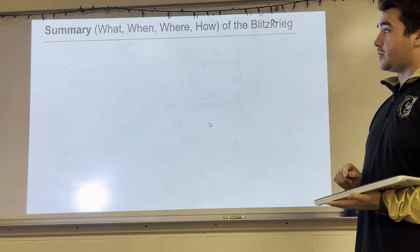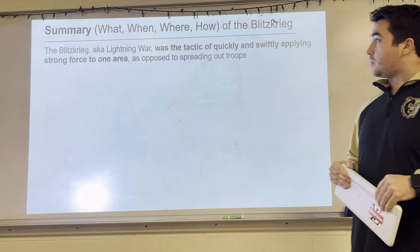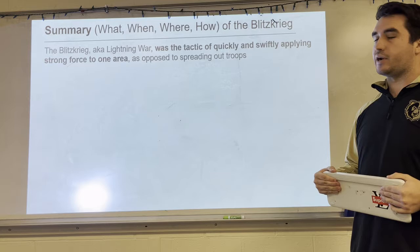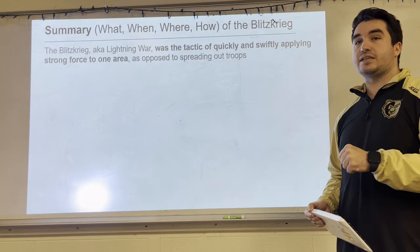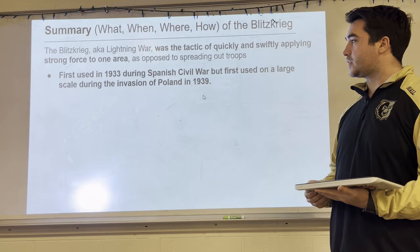We'll start with a summary — the what, the when, the where, the how of the blitz. So what was it? Blitzkrieg, also known as lightning war, was the tactic of quickly and swiftly applying strong force to one area, as opposed to spreading out troops — really quick and heavy attacks against one area instead of spreading attacks over a broad spectrum of land using a broad number of troops.